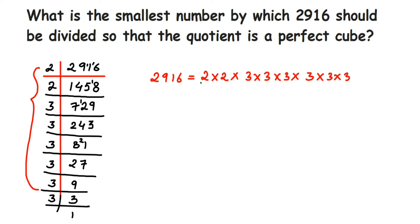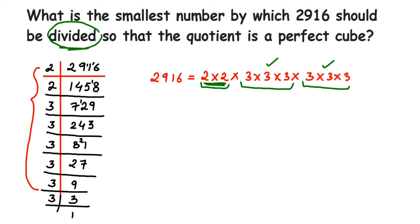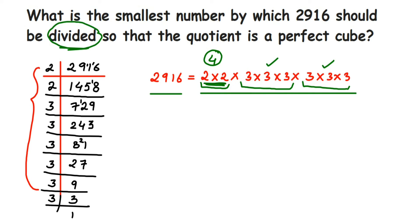If the given number is a perfect cube, the prime factors will always form sets of 3. Here, the six 3s form two complete sets of 3, which is fine. But the two 2s only form a set of 2 — not a complete set of 3. For the number to be a perfect cube, there should be three 2s. So the smallest number to divide by is 2 × 2 = 4. If we remove those two 2s from the factorization, we will get a perfect cube.